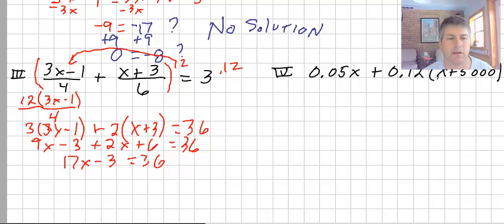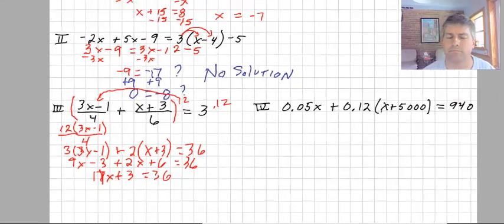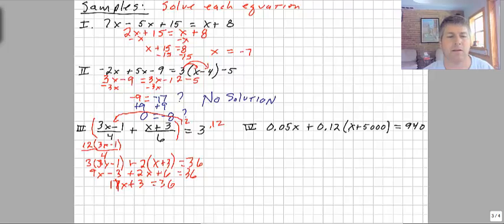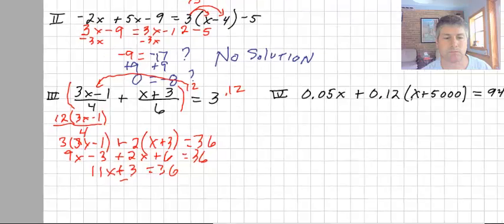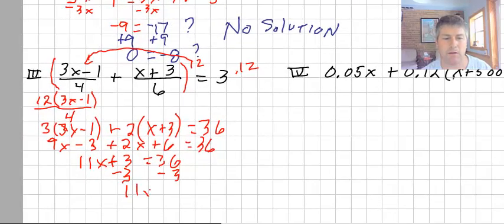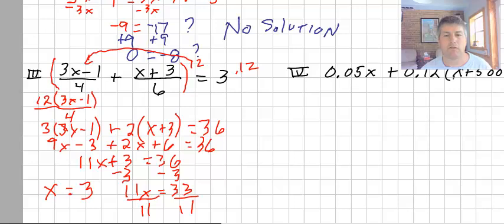No, we don't. 9x and 2x, is that 11x? 11x plus 3 equals 36. See, I'm giving you examples of mistakes not to make. 9 plus 2 is 11, 6 minus 3 is a positive 3. So we get 11x plus 3 equals 36. I subtract 3 from both sides. We get 11x equals 33. We divide by 11 on both sides and get x equals 3.